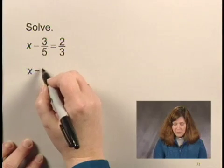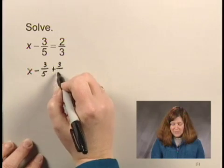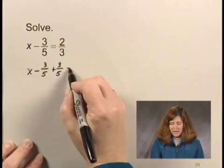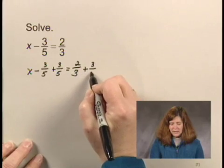That would give us x minus 3 fifths, adding 3 fifths on the left side would be plus 3 fifths, equals 2 thirds, and then we add 3 fifths on the right side as well.